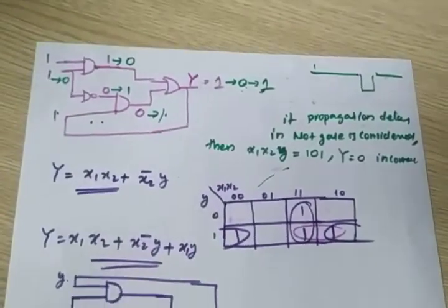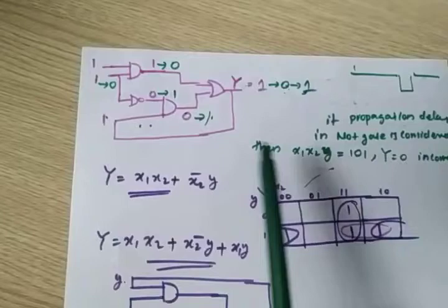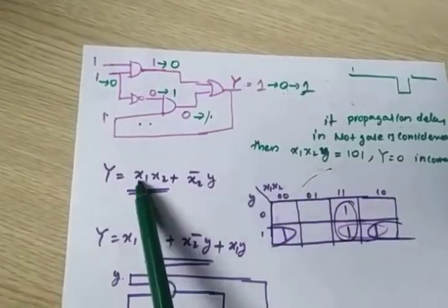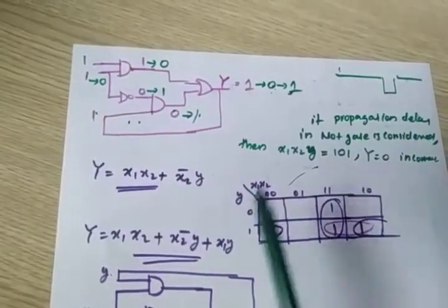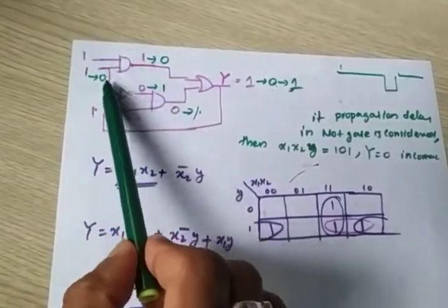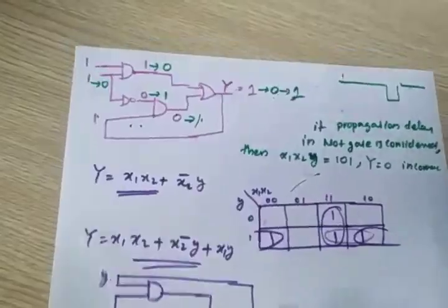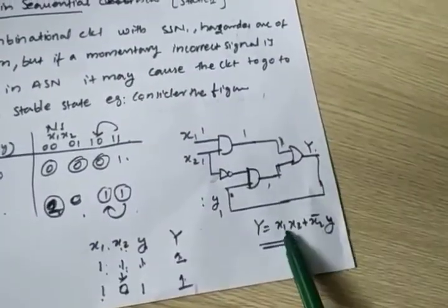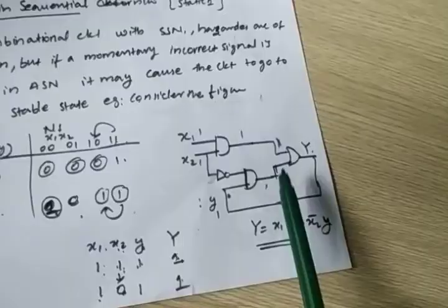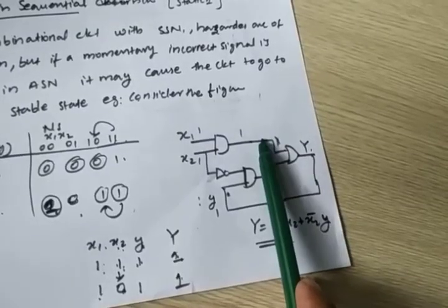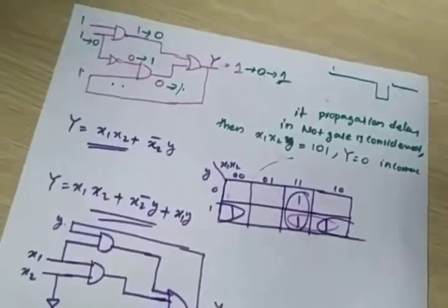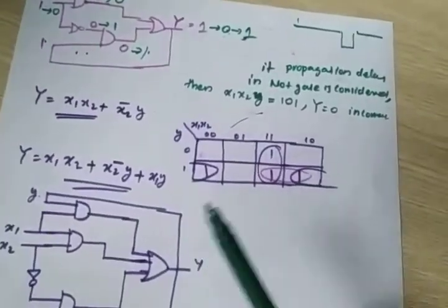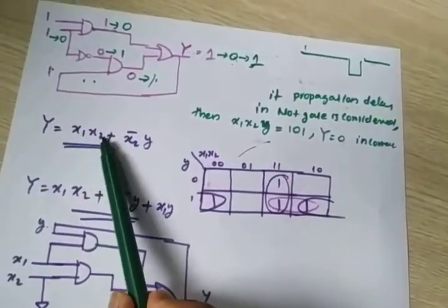Static one hazard is present here. How to eliminate it? The output equation is Y = x1·x2 plus x2bar·y. To eliminate the hazard, draw the K-map and apply the redundant group concept. x1·x2 means both are one — place ones in that column for both y=0 and y=1.